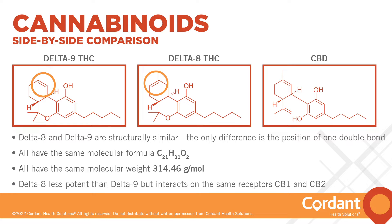Delta-8 has a double bond on the eighth carbon, while delta-9 has a double bond on the ninth carbon. The most significant difference between these two are their levels of potency and, of course, their legality. Because of the bond's location, delta-8 binds to the receptors differently, and many researchers believe this makes delta-8 less potent and intoxicating than delta-9. As it stands today, the most common cannabinoid tested in identifying marijuana use is delta-9 THC.